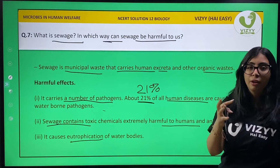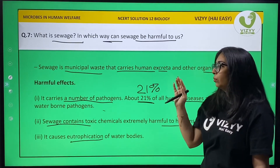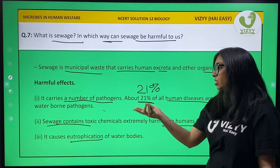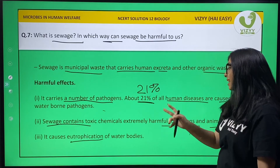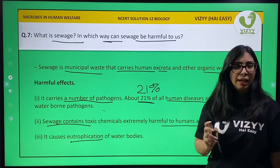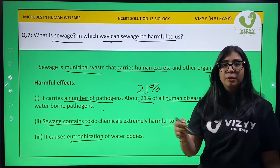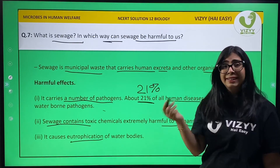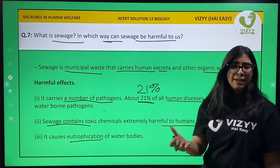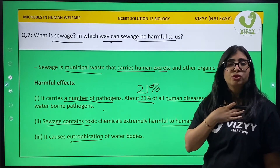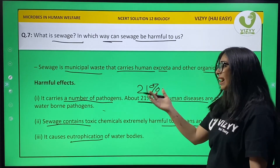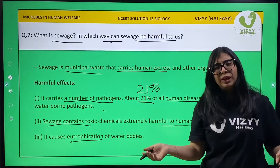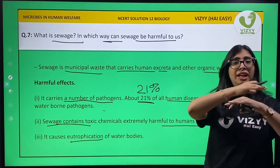Second, sewage contains toxic chemicals extremely harmful to humans and animals. It produces methane, hydrogen gas, and hydrogen sulfide gas, which are very bad in smell and toxic to us.